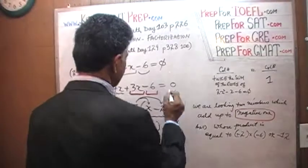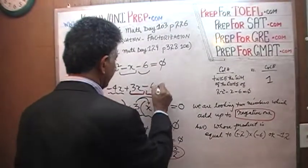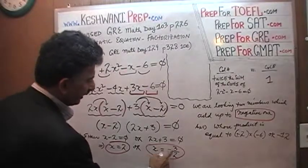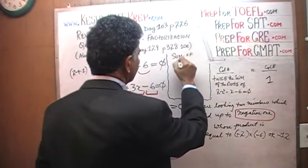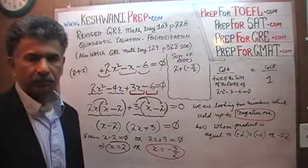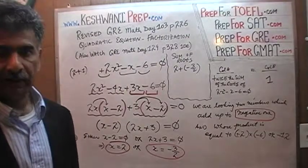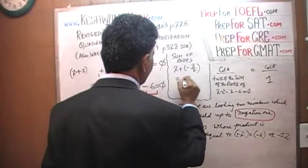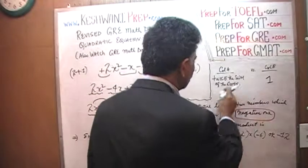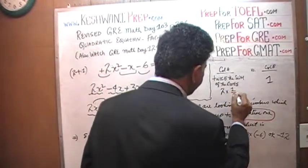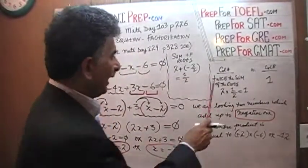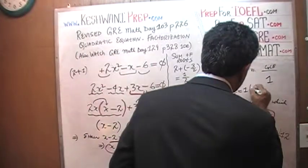We're not done yet — we need twice the sum of the roots compared to one. The roots are two and negative three halves. The sum of the roots is two plus negative three halves. Negative three halves is the same as negative one and a half, so two minus one and a half equals one half. Twice the sum of the roots is two times one half, which equals one. Therefore, twice the sum of the roots equals one, and the other column is also one — the answer is C.